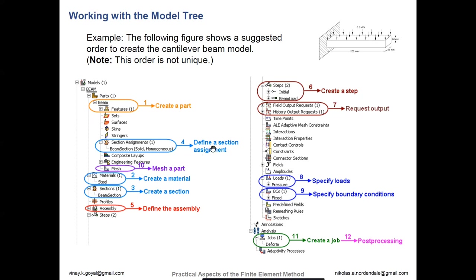Usually to define a section assignment, that's typically more useful for shell elements, beam elements. For a beam element you may have an I cross-section — that's where you could define that. For solid elements it's more trivial — you don't have to define any type of cross-sectional behavior. For trusses, you probably need a cross-sectional area. The Abaqus manual will provide you information about what's requested for that particular card.